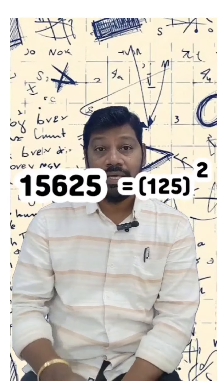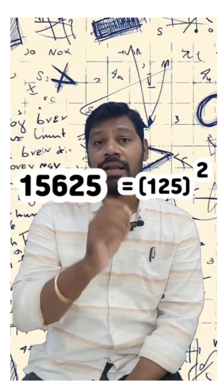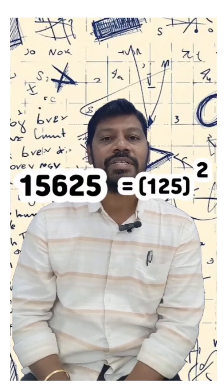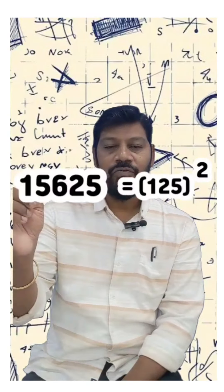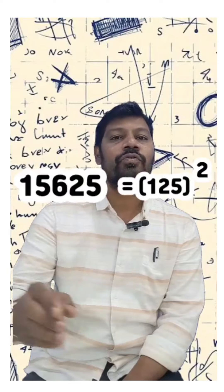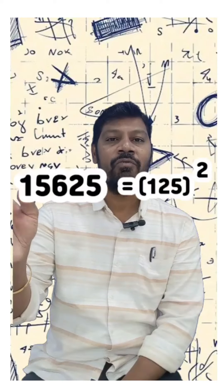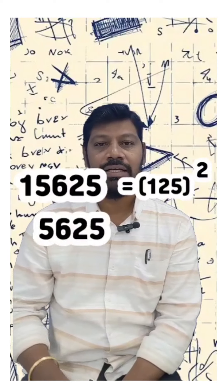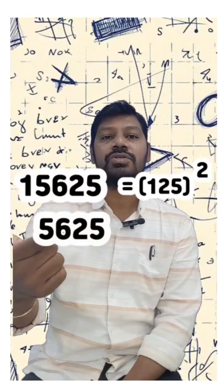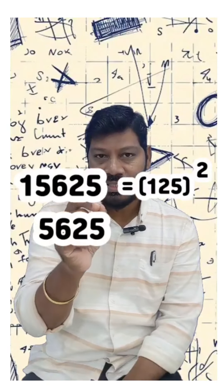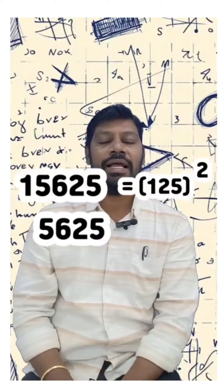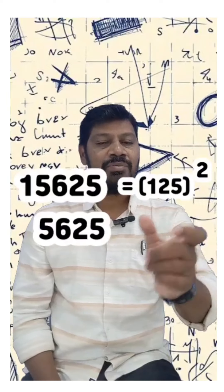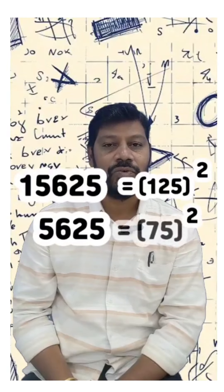This 15625 has a peculiar speciality. Why? This 15625 is a perfect square — it is 125 squared.